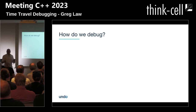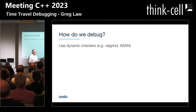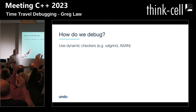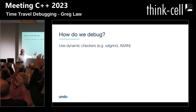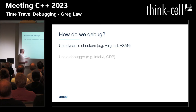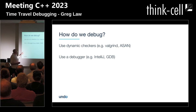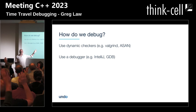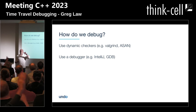So what do we do to debug? There are lots of things out there. Maybe we use dynamic checkers — Valgrind, AddressSanitizer. Who uses those at least some of the time? Pretty much a vast majority. You can use a debugger — GDB or IntelliJ. Show of hands: use the debugger at least some of the time? Most people. Who used the debugger in the last week? About half the people.